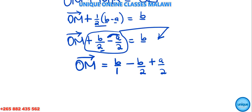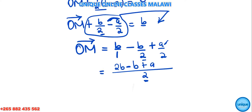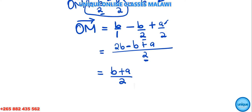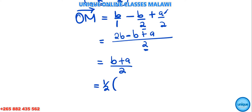Combining like terms: 2b - b = b, so OM = (b + a)/2, which can also be written as ½(a + b) or ½(b + a).